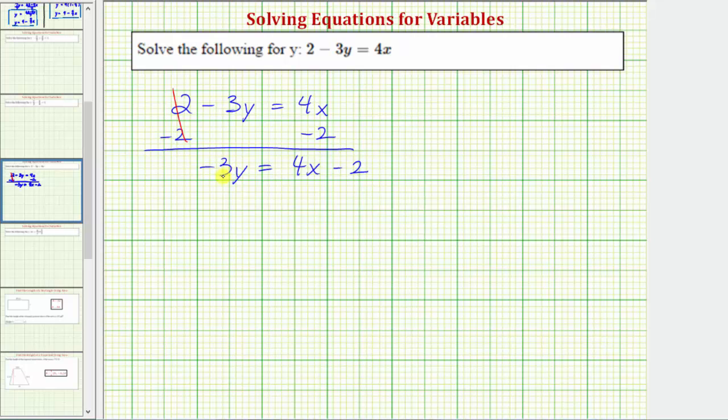On the left side, negative 3y means negative 3 times y. And therefore, to solve for y, we need to undo this multiplication by performing the opposite or inverse operation. The next step is to divide both sides by negative 3 to undo multiplying by negative 3.